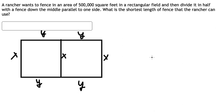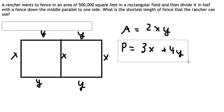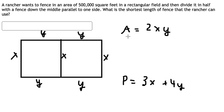So we need to find the total area. We have x multiplied by y, but this is only one section. Because the second one is the same, we put number two multiplied by xy. For the perimeter P, we have three x and four y. So they want to find the shortest perimeter where the area is 500,000 square feet.